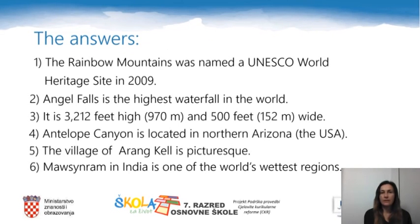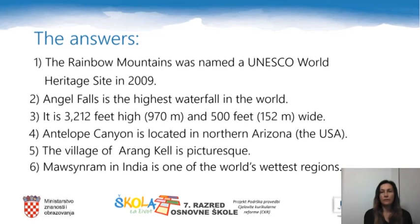Here are the answers. The Rainbow Mountains were named a UNESCO World Heritage Site in 2009. Angel Falls is the highest waterfall in the world. It is 3,212 feet high — that is 970 meters — and it is 500 feet wide, which is 152 meters. Antelope Canyon is located in Northern Arizona, USA.